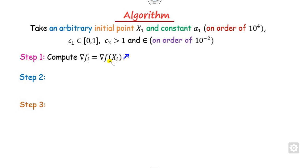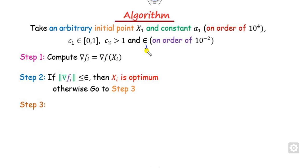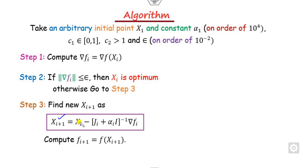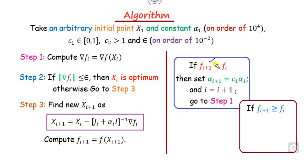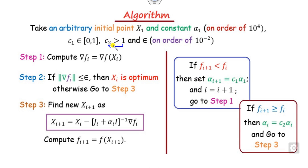You compute the gradient and check whether its norm is less than the tolerance error epsilon. If so, declare xi as optimal. Otherwise, compute the new solution using J plus alpha times I and find the new function value f(x_{i+1}). If f(x_{i+1}) is less than the previous value, multiply alpha by c1 to reduce it. If it is greater than or equal, update alpha by multiplying with c2 and repeat the step.